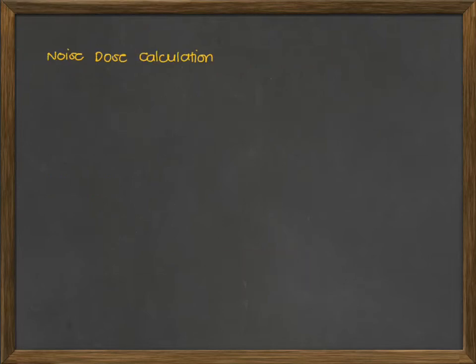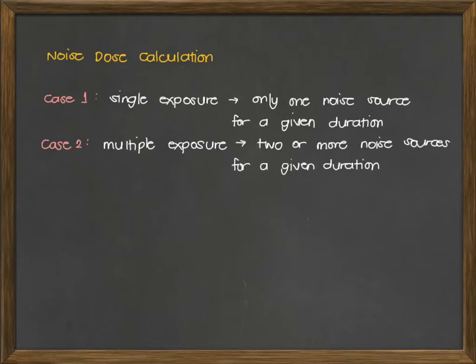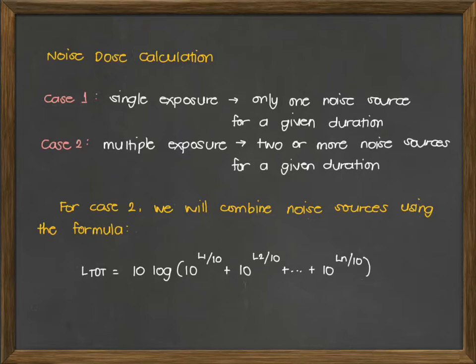For the noise dose calculation, we have two cases. Case 1 involves single exposure — this means there is only one noise source for a given duration. Case 2 is multiple exposure — this is when two or more noise sources are given for a duration. For Case 2, we will be combining noise sources using the L-total formula, where L1 denotes the first noise source and L2 the second, up to Ln depending on how many noise sources are given.